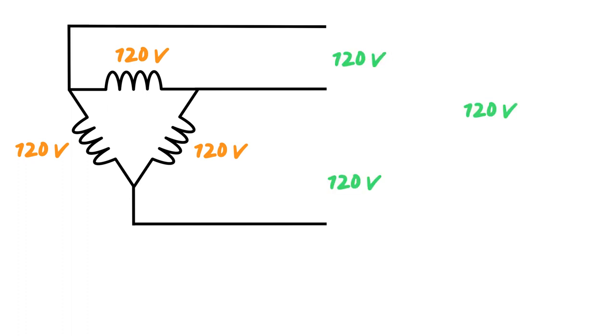Which will give me 120 on this line, 120 on this line, 120 on this line. So in a three phase delta system, your E line is equal to your E phase. So your voltage across the phase is equal to your voltage across the line. So let's put that up in the corner here. E line is 120 volts. E phase is 120 volts.